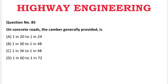Next question: On concrete roads, the camber generally provided is — A: 1 in 22 to 1 in 24, B: 1 in 32 to 1 in 48, C: 1 in 36 to 1 in 48, D: 1 in 62 to 1 in 72. The correct answer is D, 1 in 62 to 1 in 72.